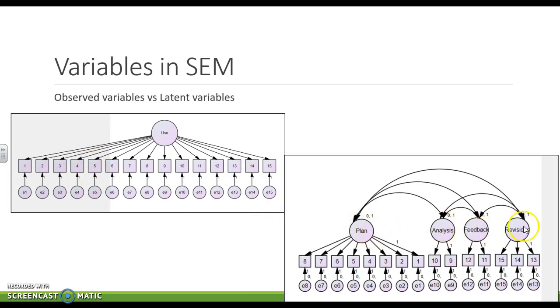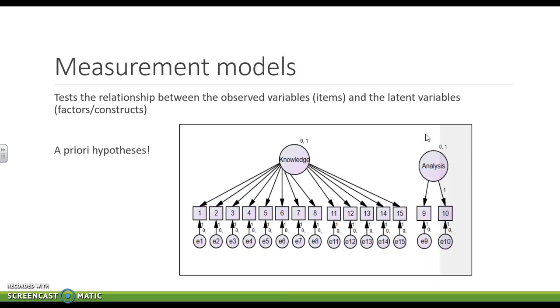Over here, I have four different latent variables that they have correlations between all of them. But I don't have any direct effects between these right now. So this is a measurement model. We're testing the idea of do these items all load like we would expect on this latent variable. These are all a priori hypotheses. These 15 items should load here. These two items should load here.